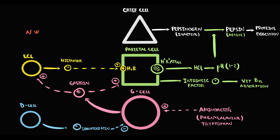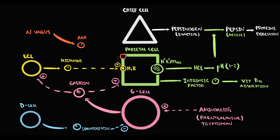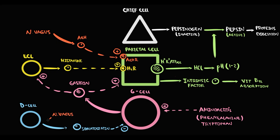The most significant regulation of gastric secretion is provided by the vagus nerve. The vagus nerve, by secretion of acetylcholine, stimulates M3 receptors on parietal cells, thereby activating them. The vagus nerve also directly inhibits the function of G cells, and simultaneously produces gastrin-releasing peptide, which stimulates G cells.